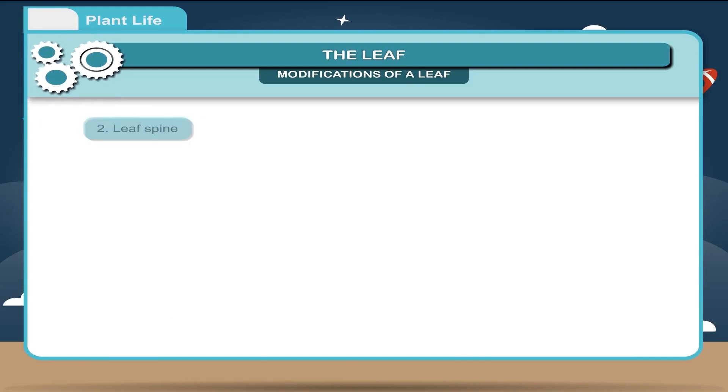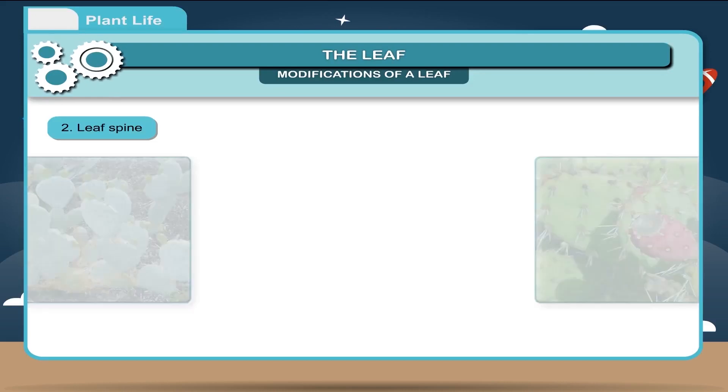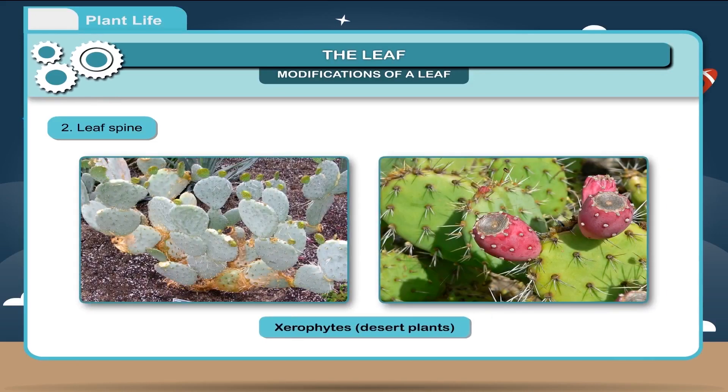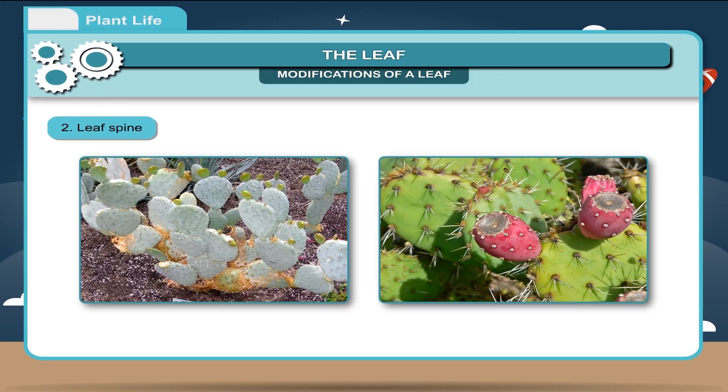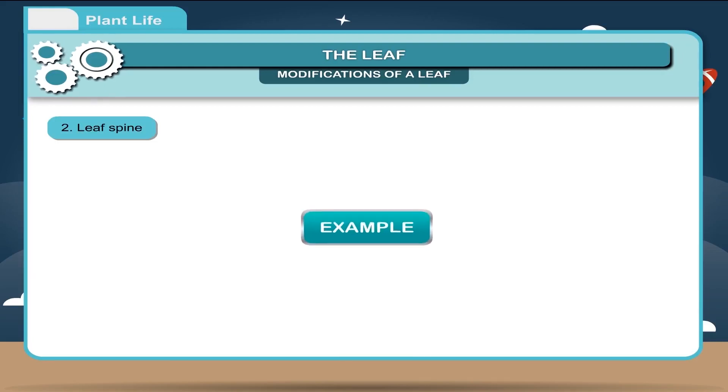Second, leaf spine. In the leaves of xerophytes, desert plants like cactus, the leaves are modified into spines. The spines prevent water loss during transpiration. Example: opuntia.